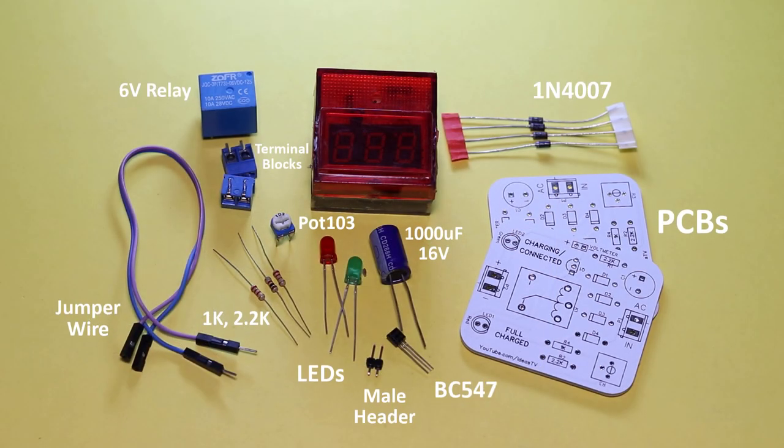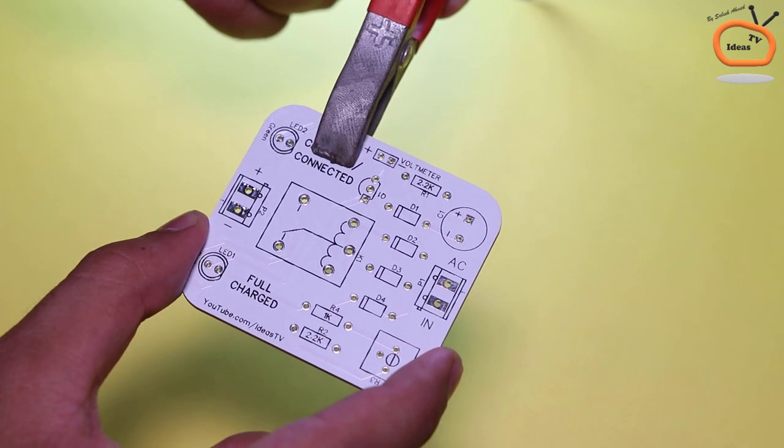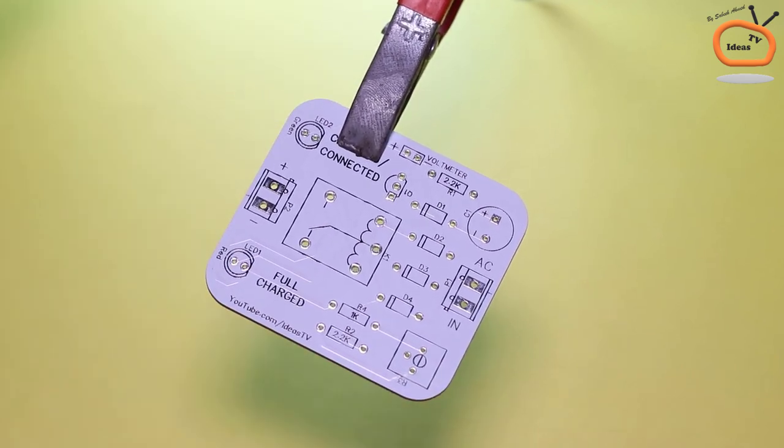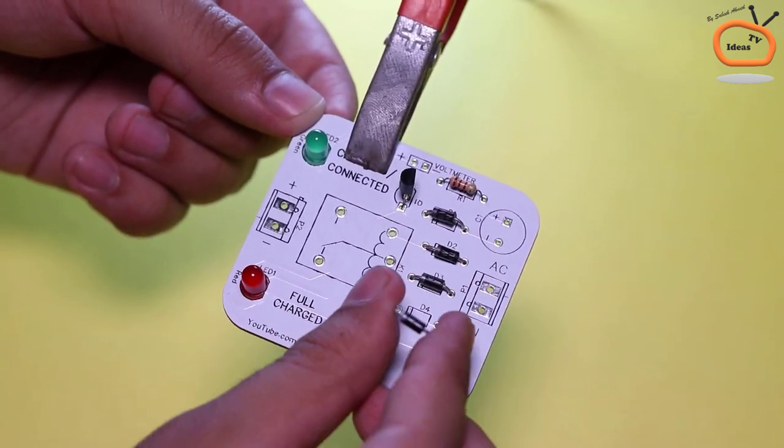These are all the components that you will need to assemble the circuit of this charger. Now I am soldering all the components to the printed circuit board according to the labeling on PCB.